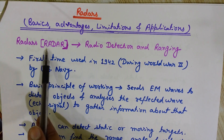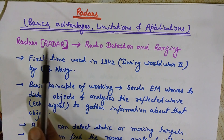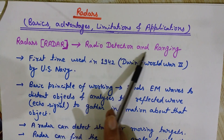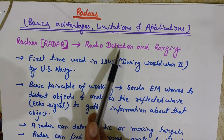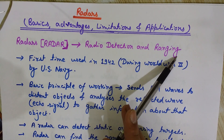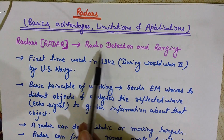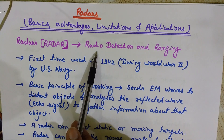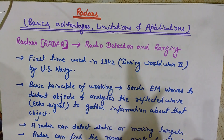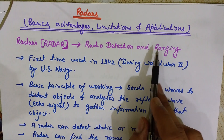First of all, let's see what is the full form of RADAR. RADAR stands for Radio Detection And Ranging, as it uses radio waves to detect and find the range of the target. It sends radio signals to the target, and these radio signals get reflected back to the radar, which analyzes these signals.